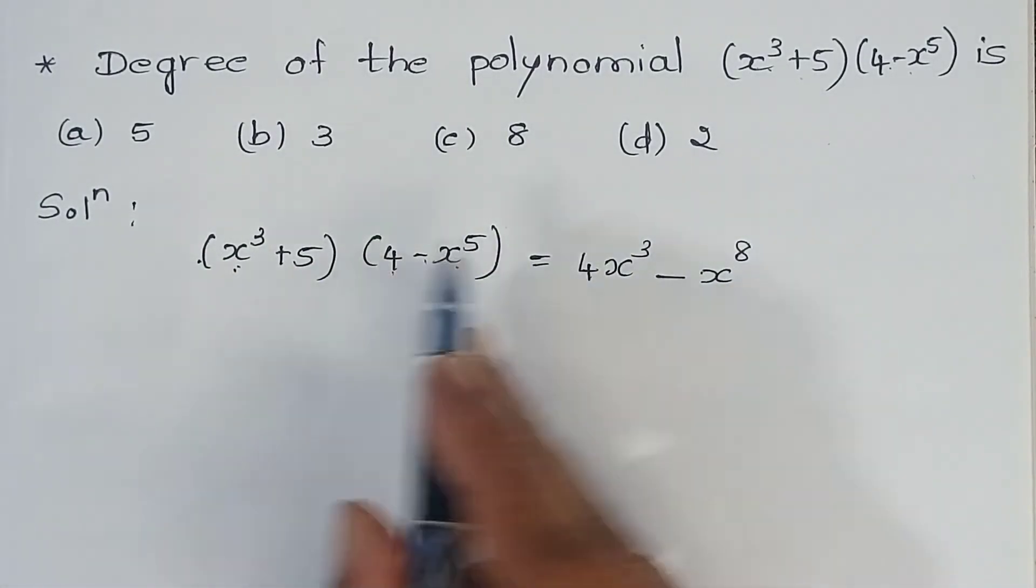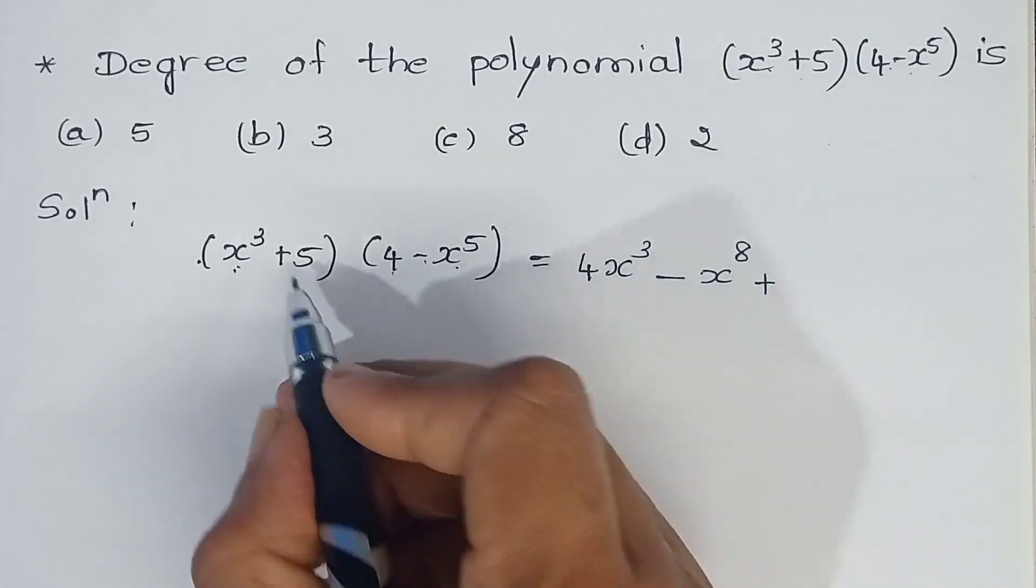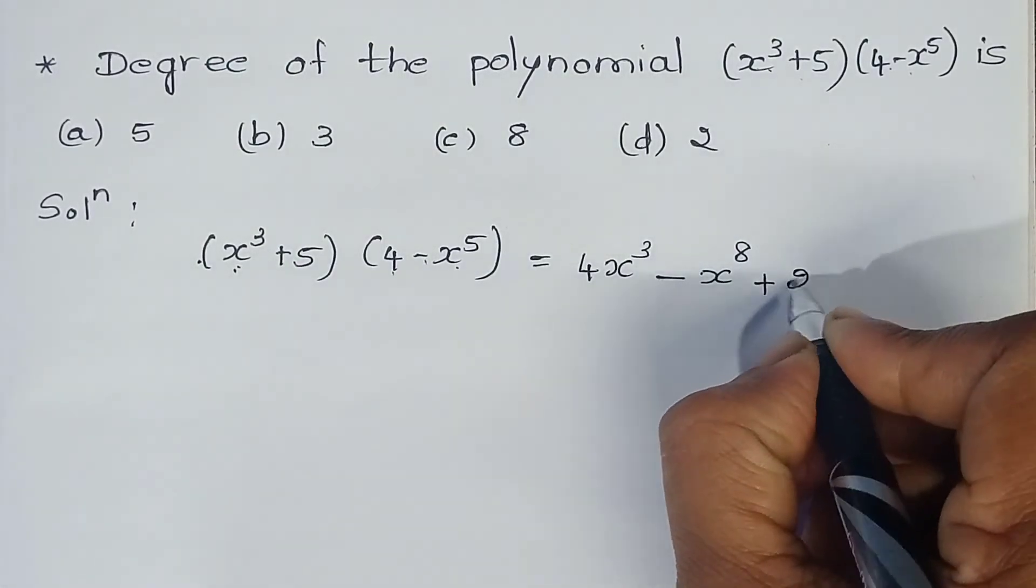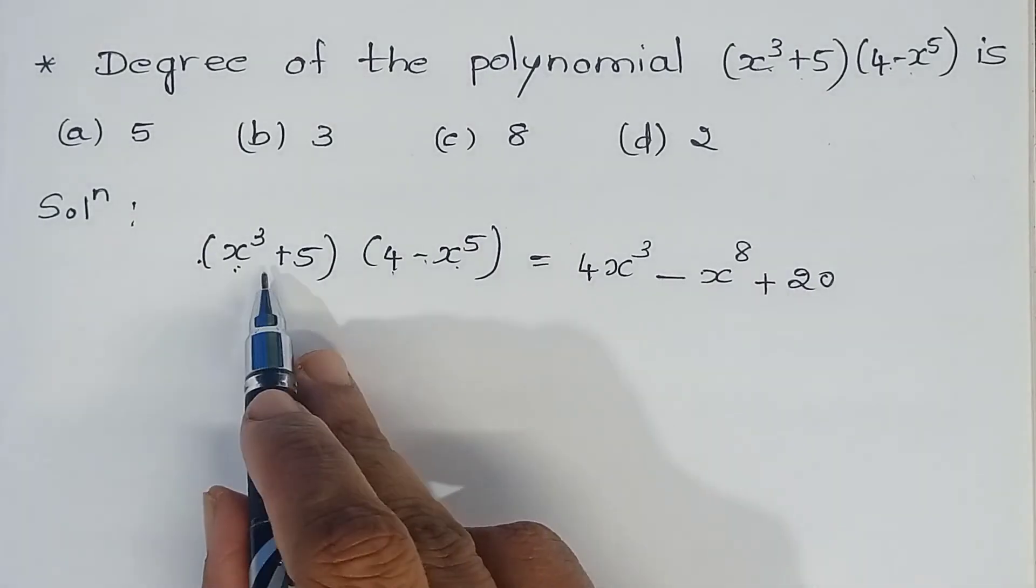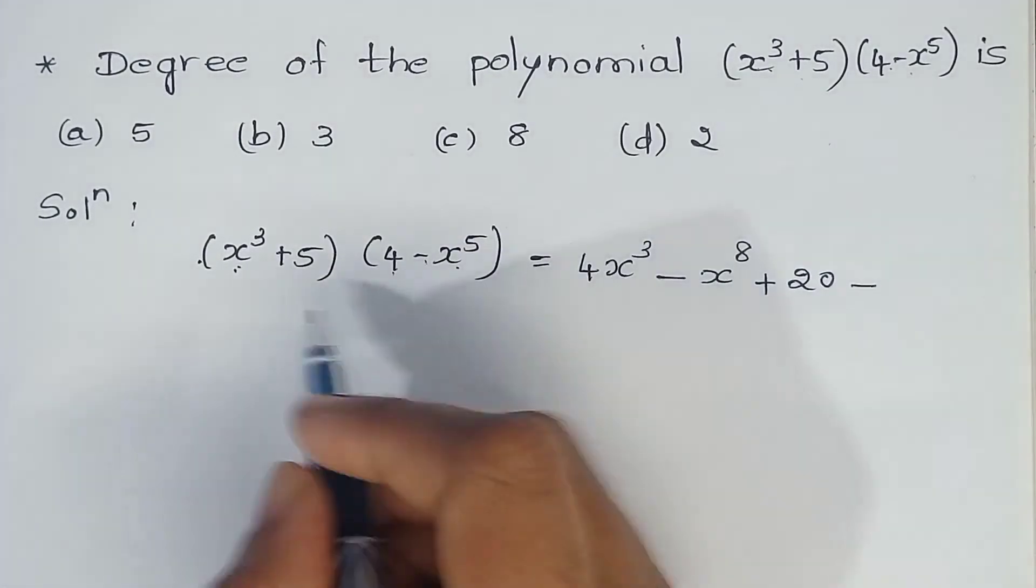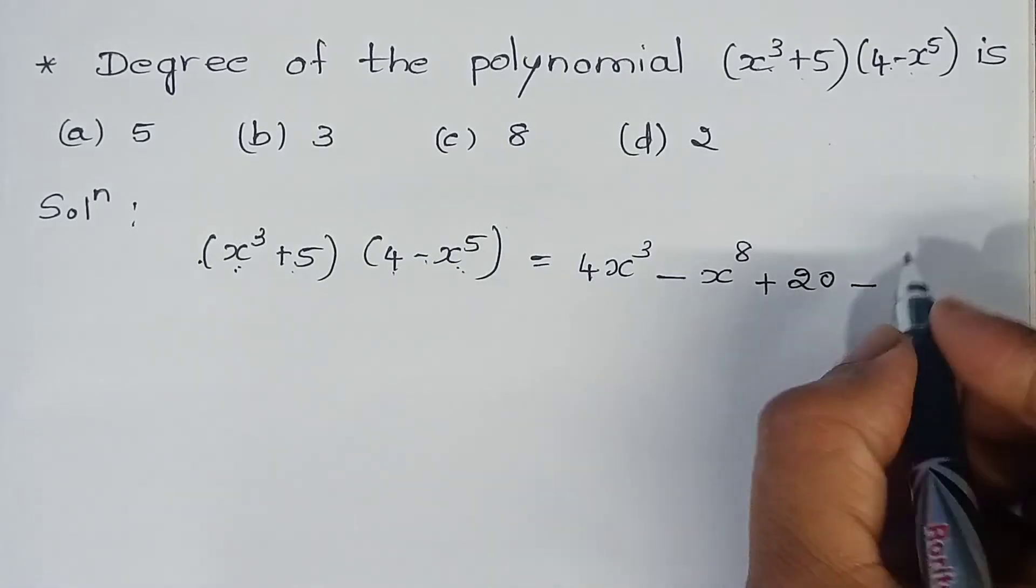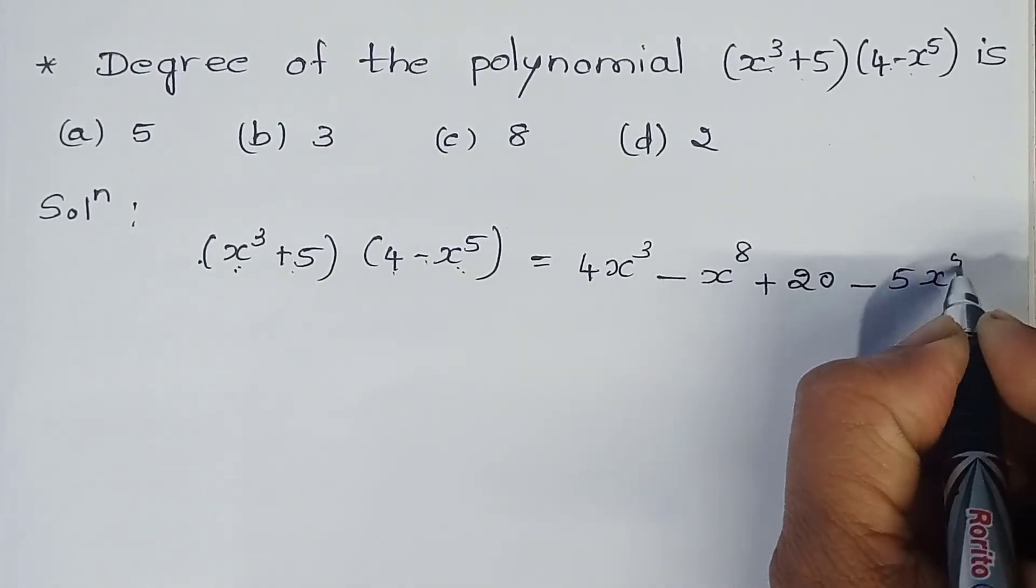Plus into plus is plus. 5 times 4 is 20. Plus into minus is minus. 5 into x⁵ is 5x⁵.